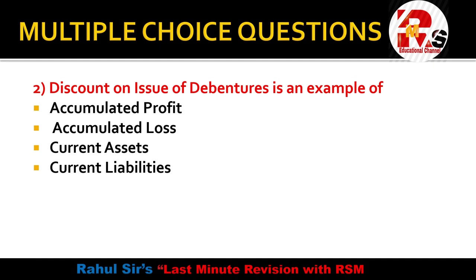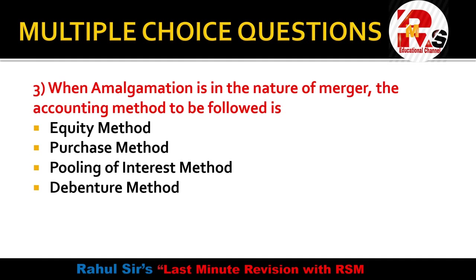Point number two: Discount on issue of debentures is an example of — accumulated profit, accumulated loss, current assets, or current liabilities? Discount on issue of debentures is an example of accumulated loss. So the right answer is accumulated loss.